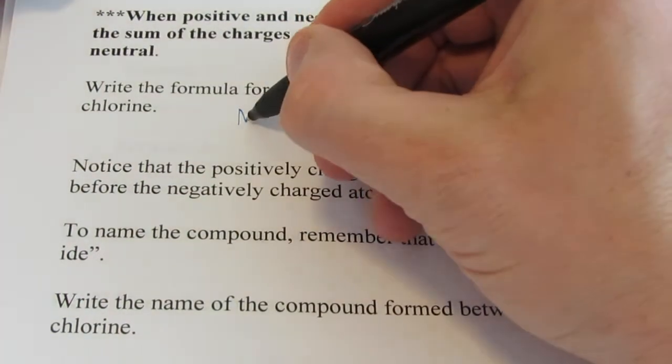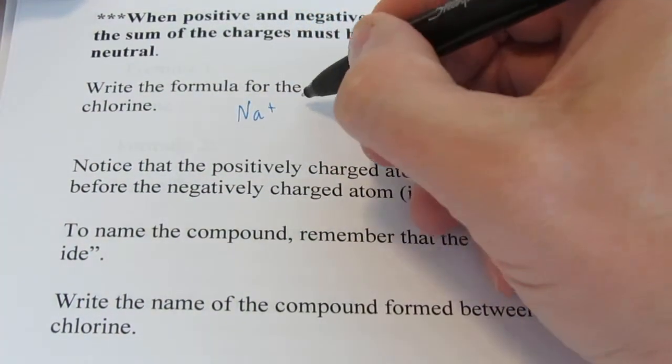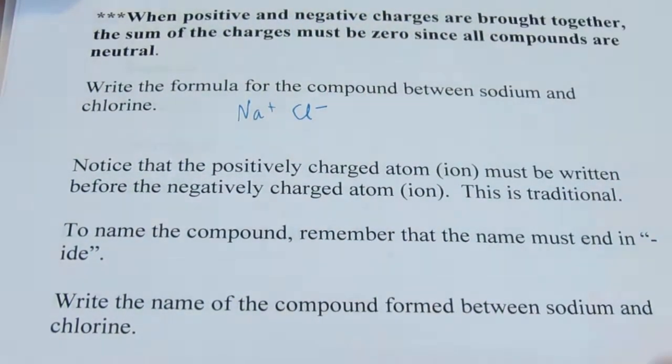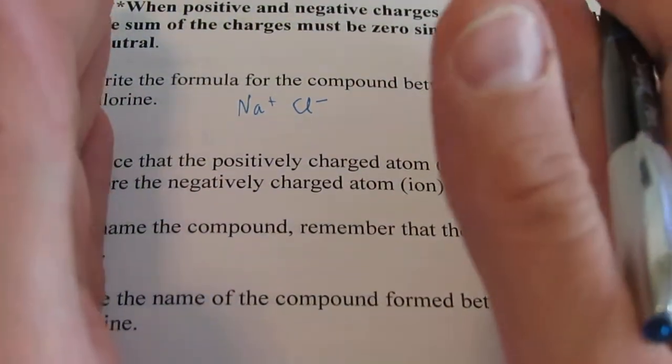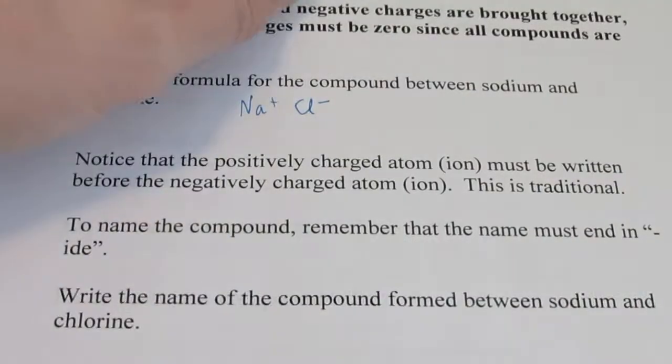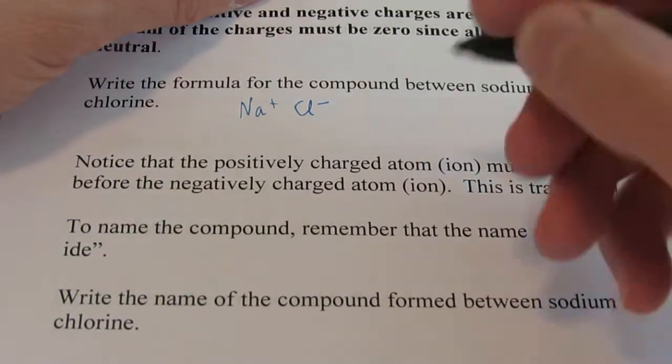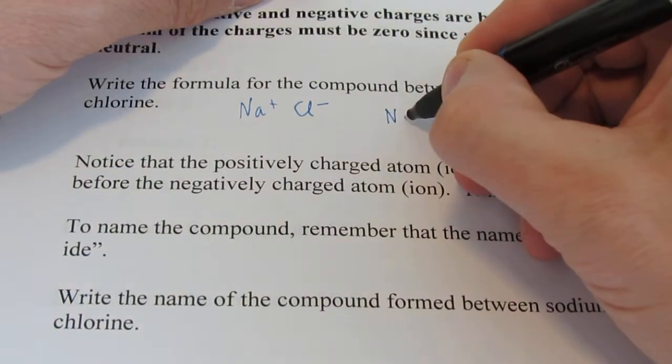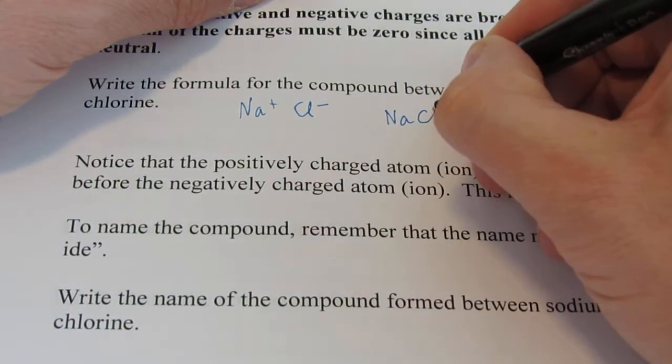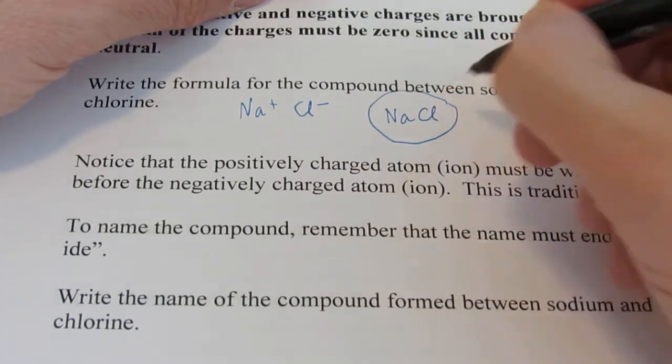So if I have Na, positive one, and Cl, negative one, how many of each of those would I need to bring together so that the sum of their charges would add up to zero? Well, of course, we need one sodium and one chlorine. And that's how we'd write the formula.